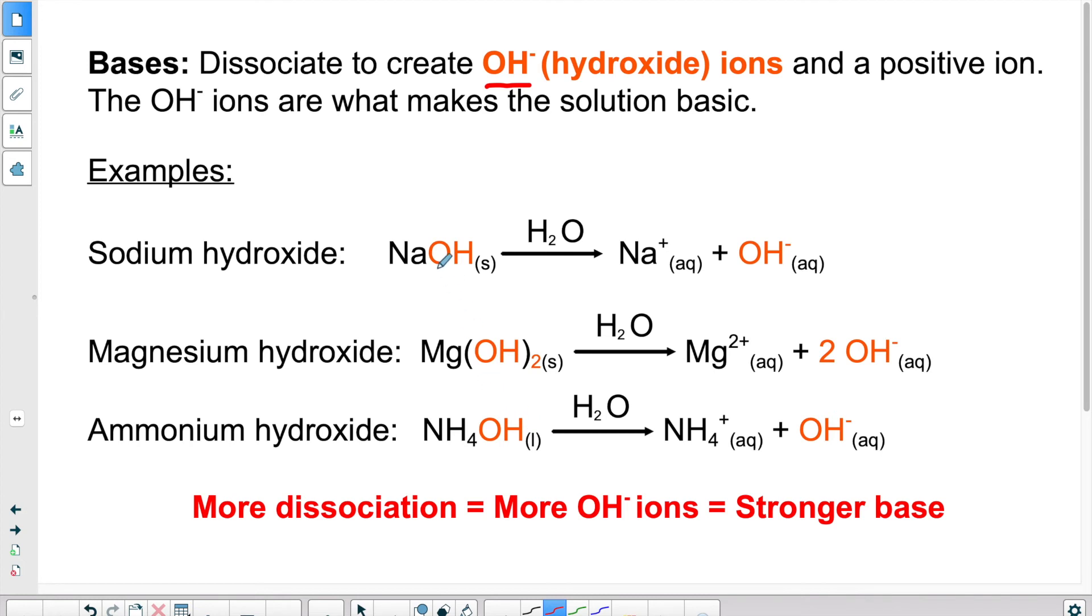So if we look at our three examples, we have NaOH. When it gets put in water, it separates in two. So we're going to have the cation, which is Na plus, and then we have the hydroxide ion, which is the basic part of the molecule.